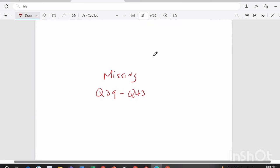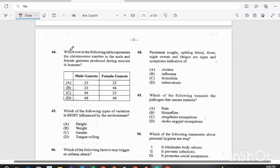We're missing questions 39 to 43 on this paper, so we are moving straight to question 44. Which row in the following table represents the chromosome number in the male and female gametes produced during meiosis in humans? Is it A, male gametes 23 and female gametes 23? Is it B, male gametes 23 and female gametes 46? C, male gametes 46 and female gametes 23? Or is it D, both male and female gametes equal 46 each? How many are produced during meiosis in humans? The answer there is A, 23 for the male and 23 for the female.